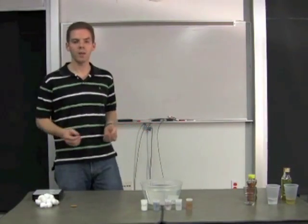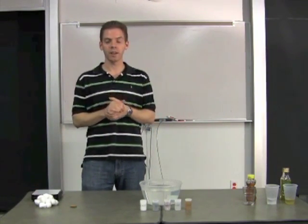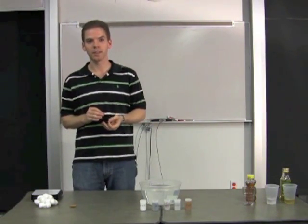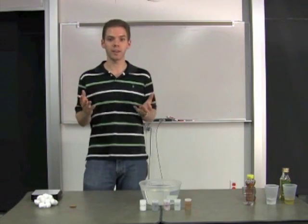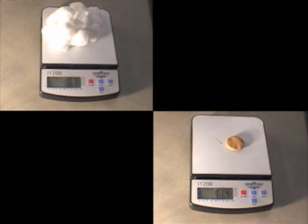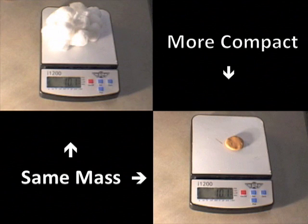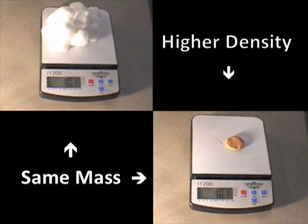So what is density and why does density matter? Density can be thought of as how compact a material is — in other words, how much material is in a substance and how much volume does that material take up? We have here a pile of cotton balls and a very small amount of modeling clay. If we put both of these on a scale side by side, we see that both weigh 10.1 grams. Because they have the same mass, the material in the modeling clay is much more compact, and therefore has a higher density than the cotton balls.